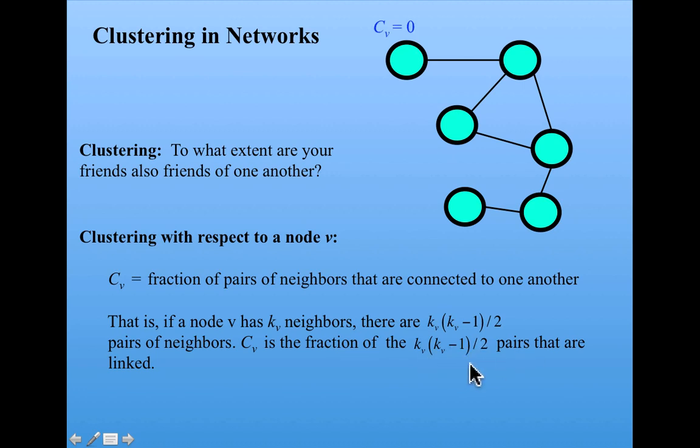So let's look at that. For this node, it only has one neighbor. And so by definition, if you only have one neighbor, your clustering is zero, since you don't have any pairs of neighbors.